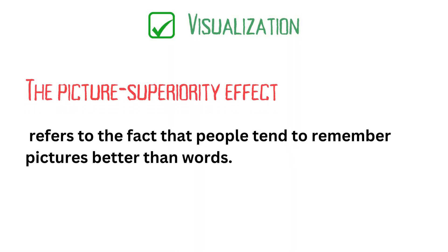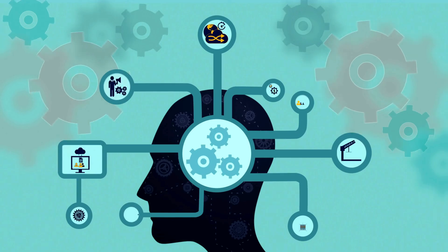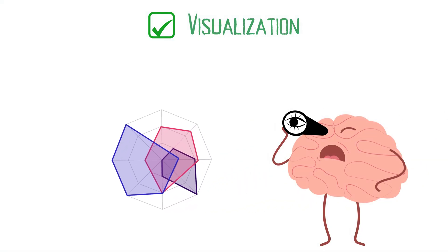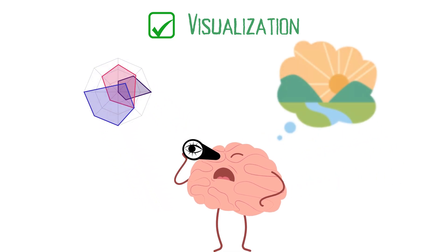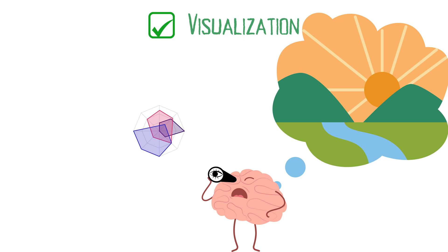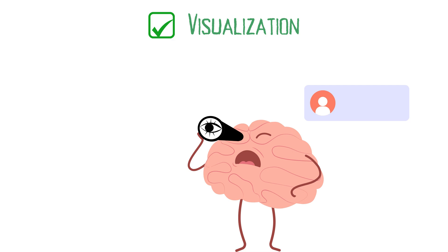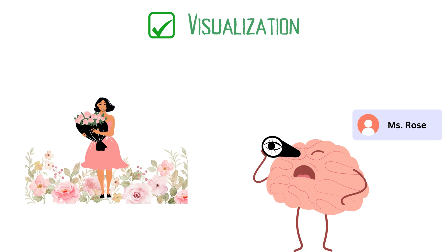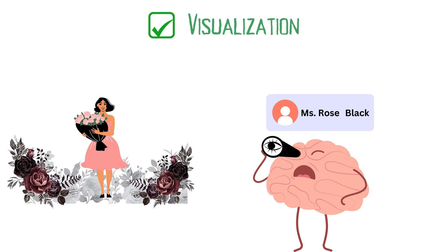Visualization is a powerful memory technique that leverages the brain's natural ability to remember images more easily than text or numbers. By creating vivid, detailed mental images, you can improve your ability to recall information. To practice visualization, start by choosing a piece of information you want to remember. Then, create a mental image that represents that information. The image should be as detailed and colorful as possible, and it should involve elements that are unusual or surprising. For example, if you need to remember a person's name, associate the name with a vivid image. If the person's name is Rose, imagine them holding a bouquet of roses or standing in a rose garden. The more unique and striking the image, the easier it will be to recall the name later.